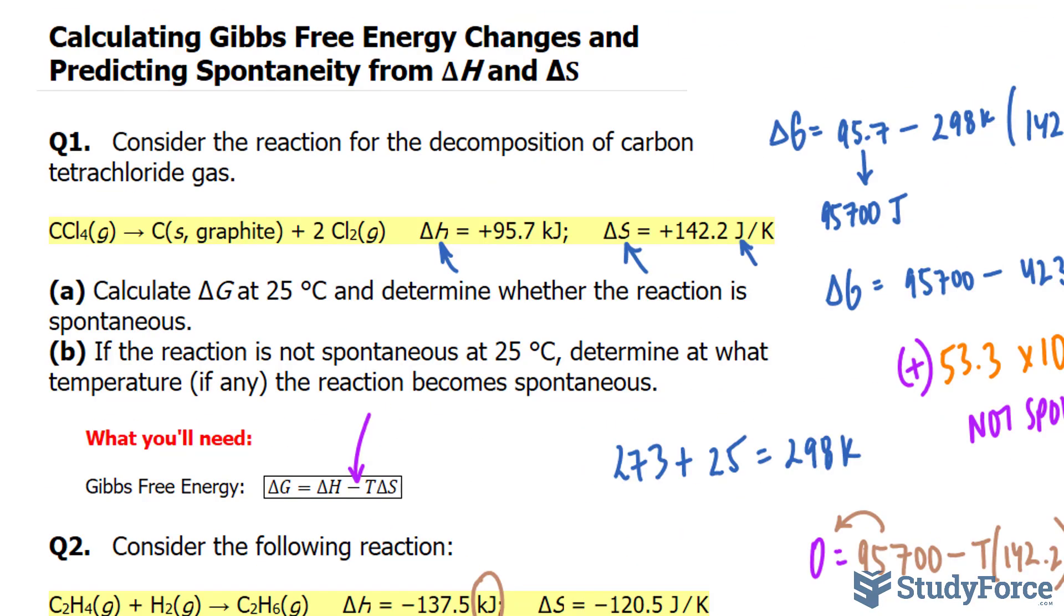And there you have it. That's how to calculate Gibbs's free energy and predict spontaneity from delta H and delta S.